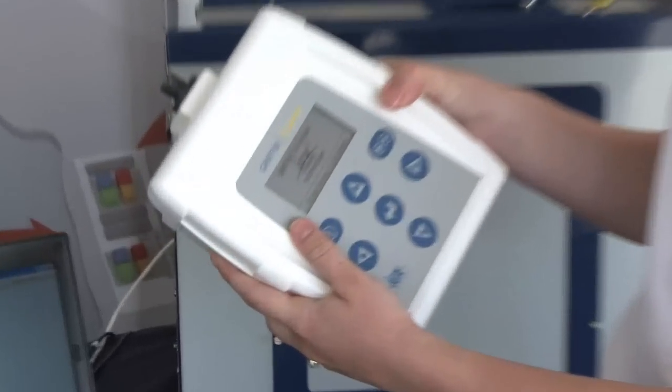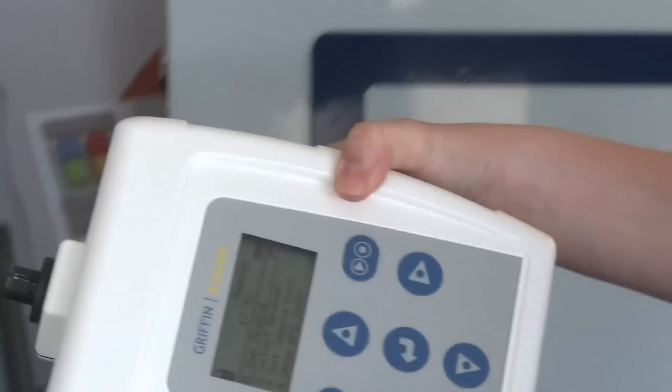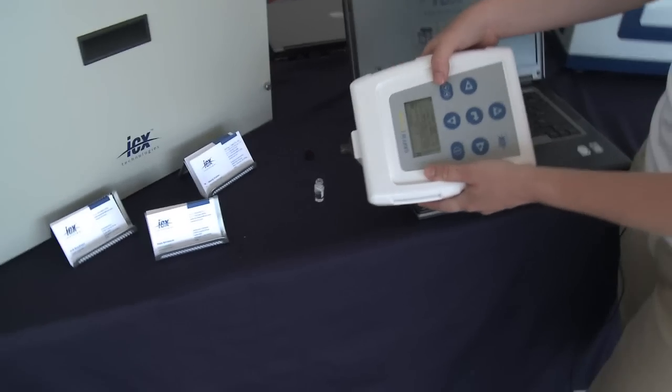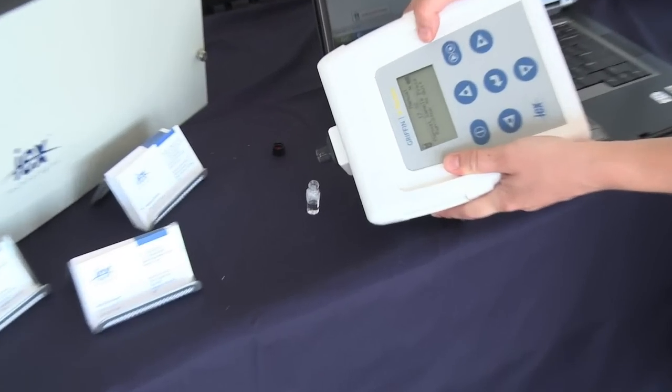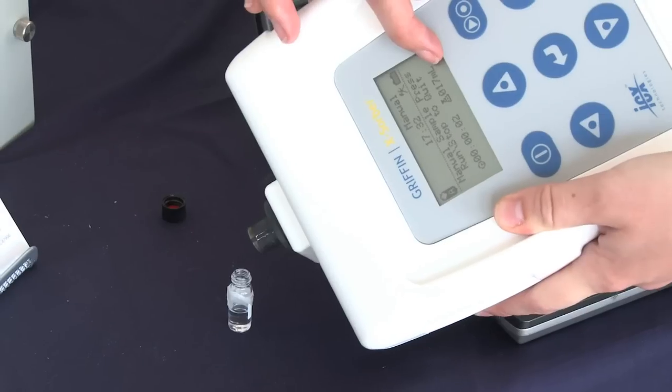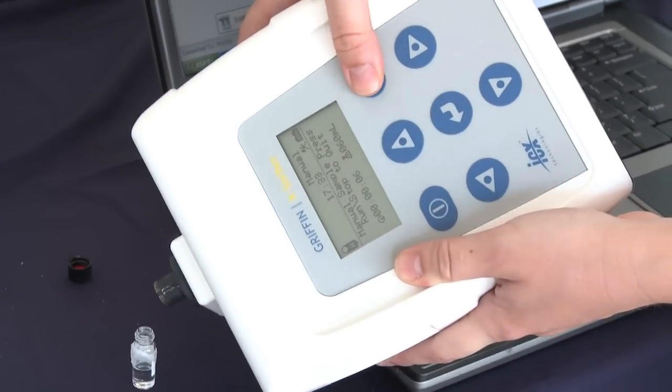We're going to take it over here and collect 60 milliliters of this clear unknown sample. I've pressed start and it's sampling. Here are the milliliters, here's the time, and we now have 60 milliliters, so I've pressed stop.